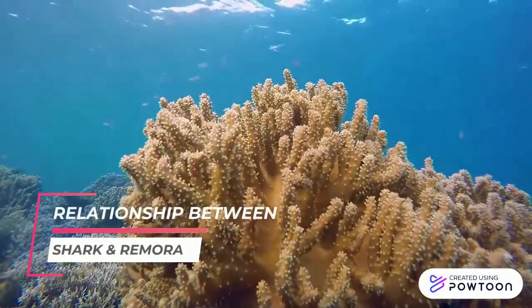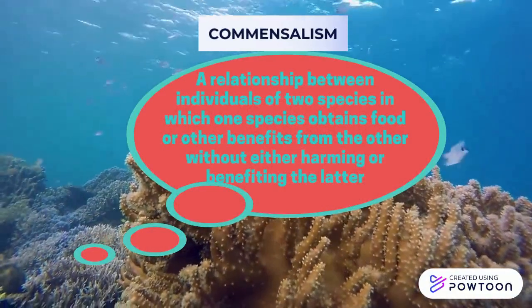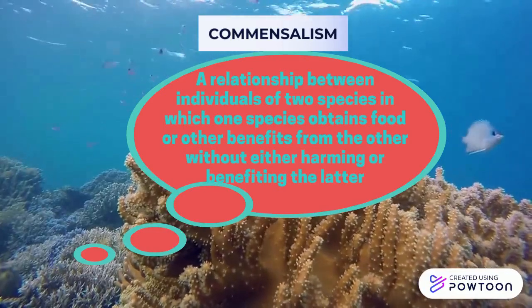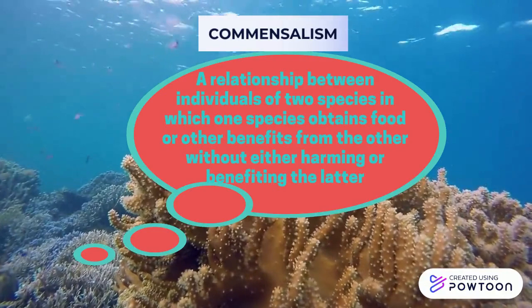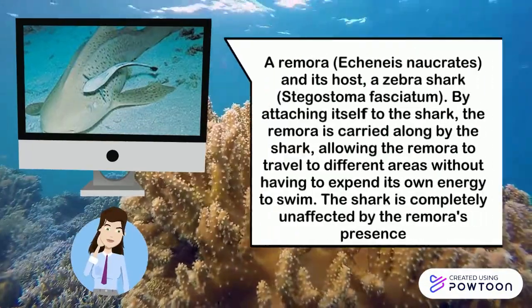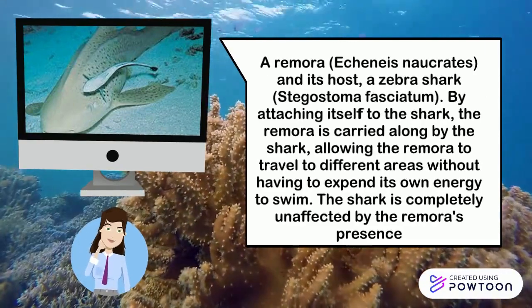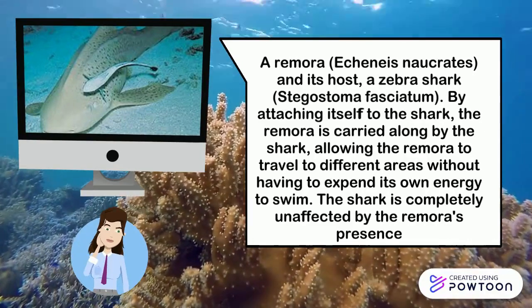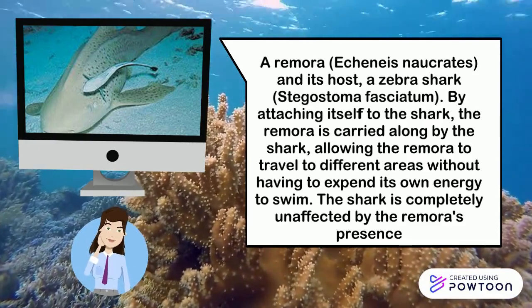The relationship between shark and remora is commensalism, which is a relationship between individuals of two species in which one species obtains food or other benefits from the other without either harming or benefitting the latter. A remora and its host, a zebra shark — by attaching itself to the shark, the remora is carried along, allowing it to travel to different areas. The shark is completely unaffected by the remora's presence.